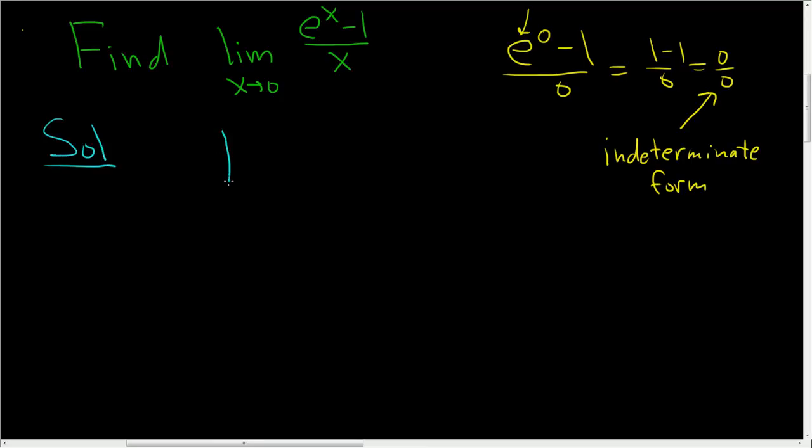We're going to use L'Hopital's right from the beginning. So this is the limit as x approaches 0. Because we have 0 over 0, we can use L'Hopital's. That means we take the derivative of the numerator.